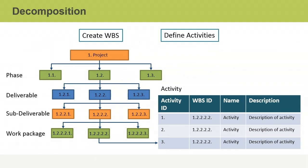The first one we're going to talk about is decomposition. The work breakdown structure, or WBS, is an important visual document that you create during project planning. You use the WBS to decompose or divide a project into more manageable pieces called work packages. After you have fully decomposed the project into manageable work packages, you can then identify the activities that will be needed to accomplish the work.